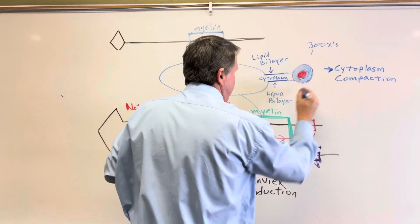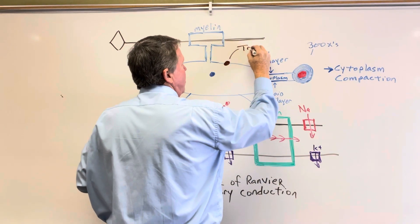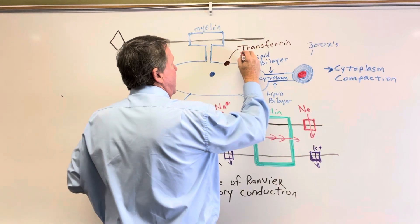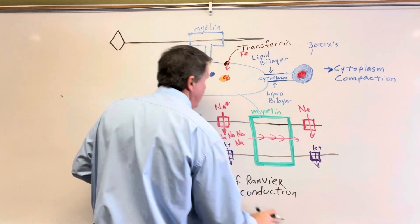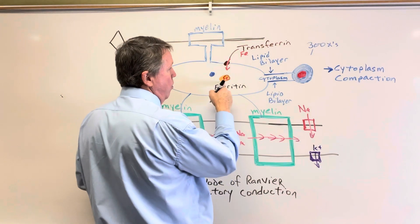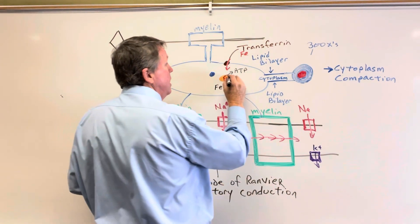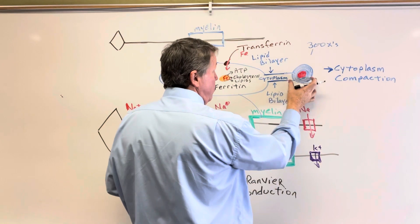Let's talk about some other things oligodendrocytes do. On oligodendrocytes, you have a protein called transferrin, which is responsible for bringing iron into the oligodendrocyte. Inside the oligodendrocyte, there's another protein called ferritin, which is responsible for storing the iron. The iron helps make ATP, acting as a coenzyme. It also acts as a coenzyme in converting cholesterol and lipids into nutrients that myelin can use or to make new myelin.